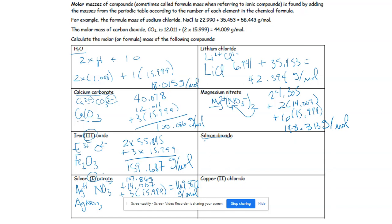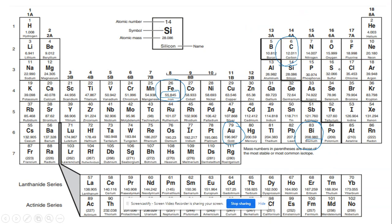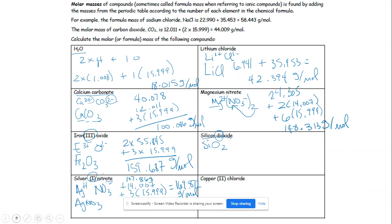Silicon dioxide is a covalently bonded compound, so we use prefixes. 'Di' oxide means two oxygens, and silicon is Si — so the formula is SiO₂. Silicon is 28.086 on the periodic table and oxygen is 15.999. One silicon plus two oxygens: 28.066 + 2 × 15.999 = 60.064 grams per mole.